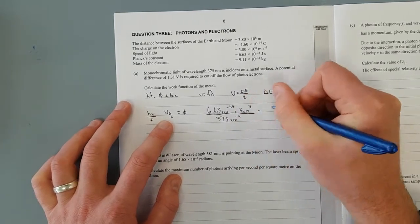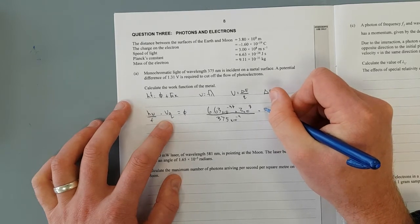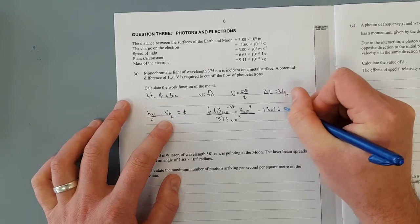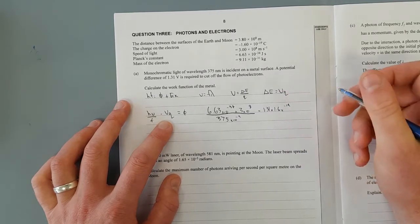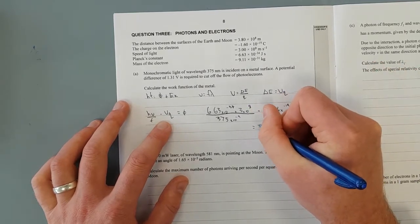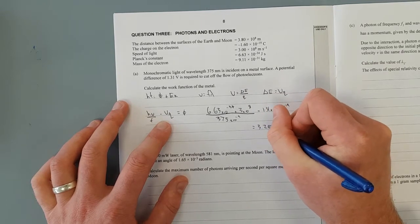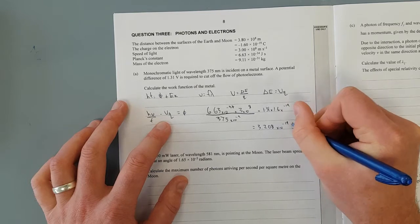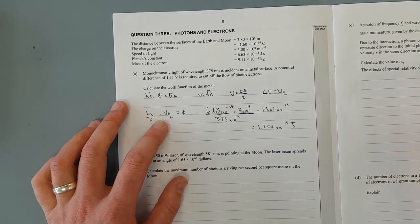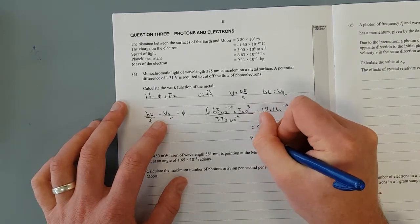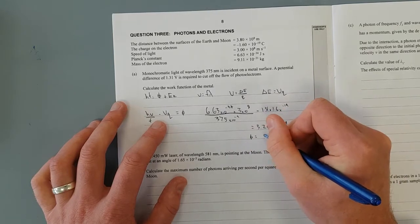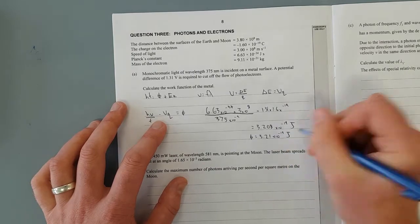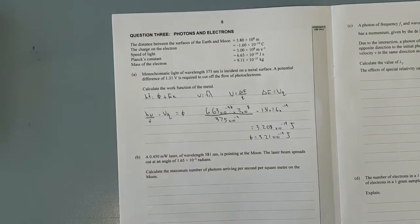And we're going to minus that 1.31 volts times charge on electron, which is 1.6 times 10 to the negative 19, and that'll give us 3.208 times 10 to the negative 19 joules, which is tiny, which is reasonable. In other words, the work function equals 3.21 times 10 to the negative 19 joules.